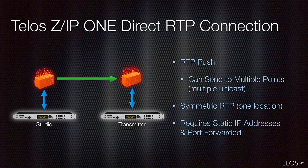The third connection type is RTP push — the encoding ZIP1 pushes an IP stream to the other end. With RTP push, there's no two-way handshaking, so you don't get automatic bit rate control, but you still have automatic buffering size at the receive end. There's also a variation called symmetric RTP, where you send an IP audio stream to one codec and that codec returns an IP audio stream back over the same path to the originating source.